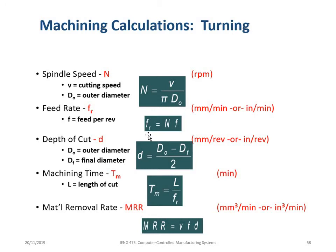Depth of cut d is normally in millimeters, which is original diameter Do minus final diameter Df divided by 2. Machining time Tm can be determined by total cutting length L divided by feed rate Fr.